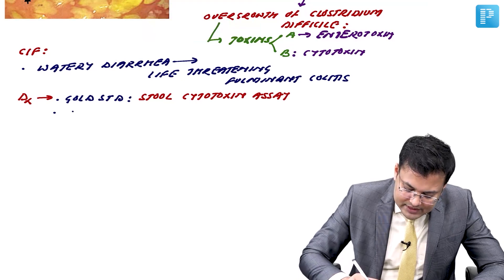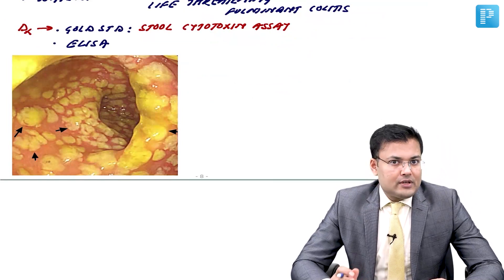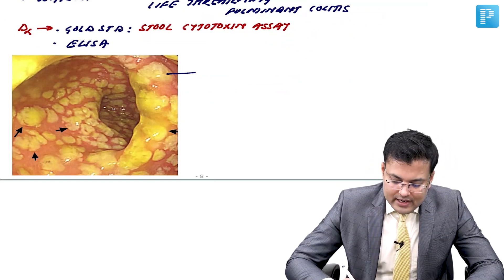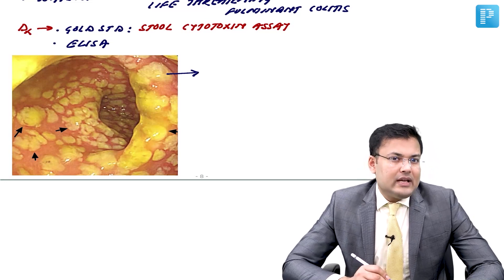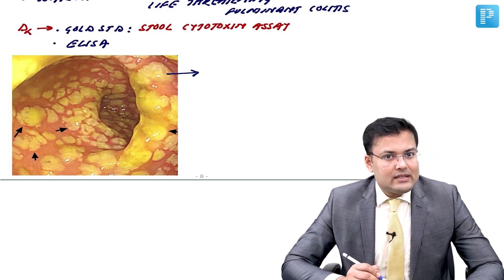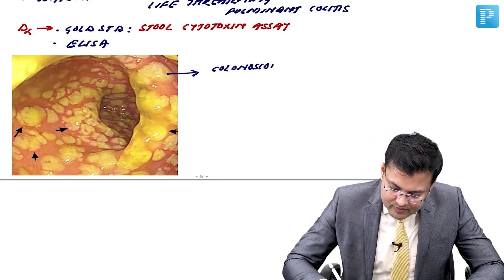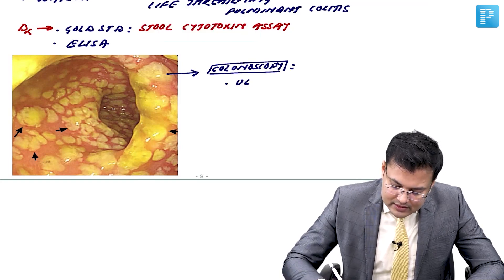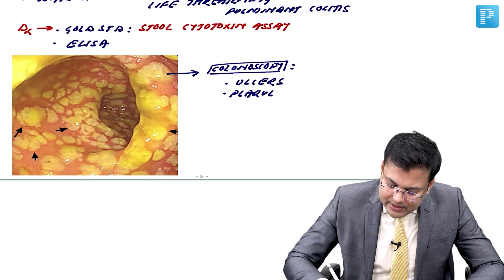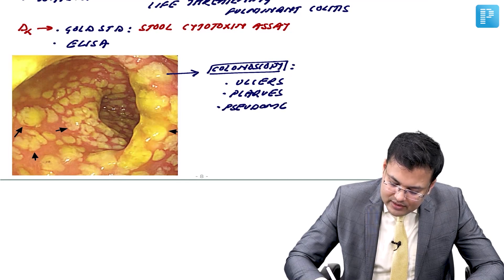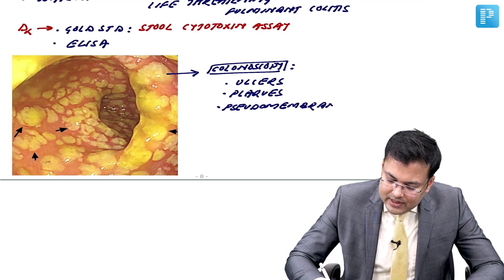Colonoscopy is not usually performed, but if done, you will find ulcers, plaques, and pseudomembrane — signs of inflammation. Since there is pseudomembrane in the colon, this is known as pseudomembranous colitis.